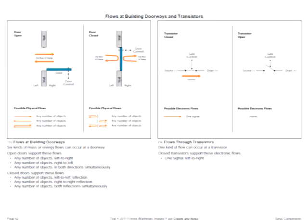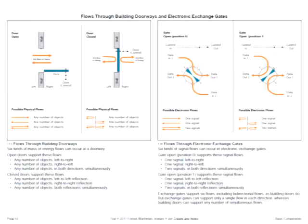This shows flows at building doorways versus flows at transistors. On the left side are flows at building doors: three kinds when the door is open, and three kinds of reflective flows when the door is closed — six flows total of any number of objects, bi-directionally or mono-directionally. On the right, there's only one kind of flow implemented by a transistor: a single signal in one direction. When the gate of a transistor is open, there are no flows. But there is a kind of electronic gate that accommodates six flows as building doors do.